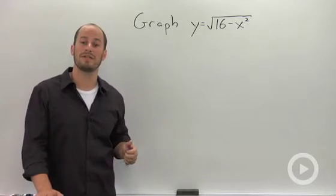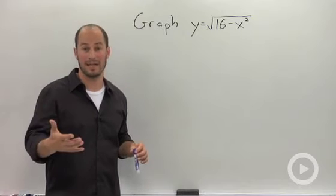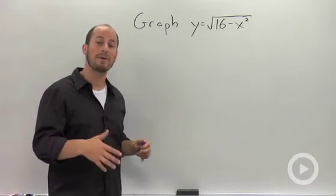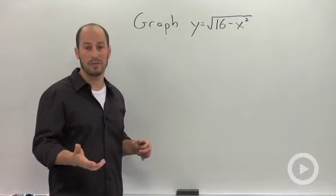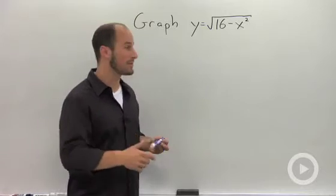What we have to do is get this equation into a form we recognize. And by doing that we actually have to get rid of the square root. So what I'm going to do is square both sides.